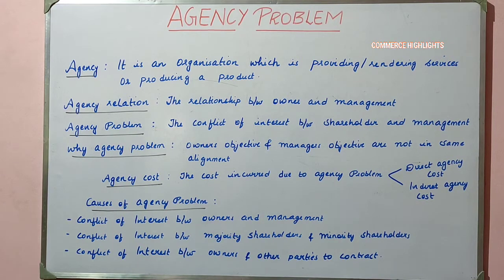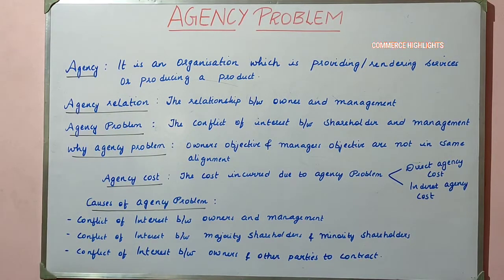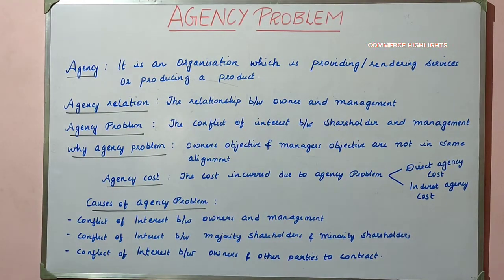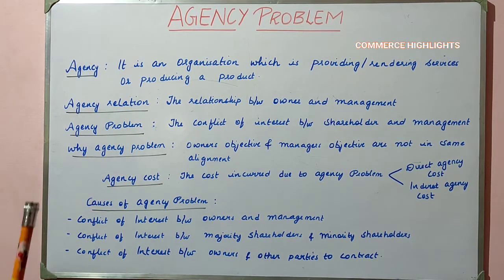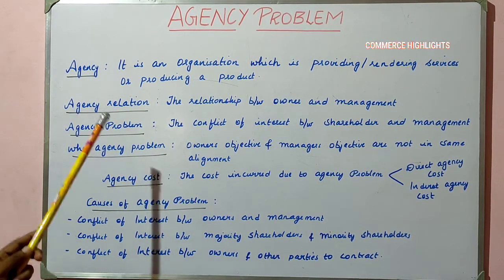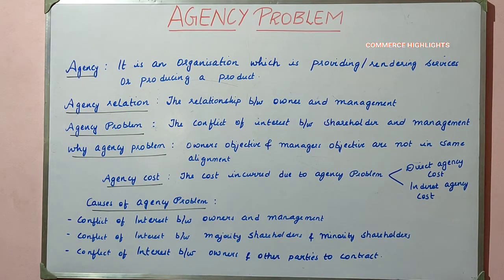Based on that concept, if you see agency relationship, the relationship between an owner and the management is generally termed as an agency relationship. That is, the bonding which an owner has with the management is considered an agency relationship. And when that relationship breaks, it is termed as agency problem.